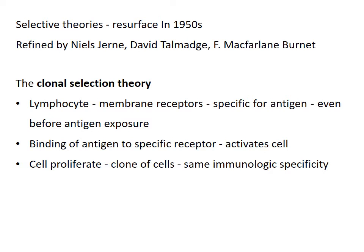In the 1950s, selective theories resurfaced and were refined by Niels Jerne, David Talmadge, and F. Macfarlane Burnet as the clonal selection theory. According to this theory, an individual lymphocyte expresses membrane receptors that are specific for a distinct antigen even before the lymphocyte is exposed to the antigen. Binding of antigen to its specific receptor activates the cell, causing it to proliferate into a clone of cells that have the same immunological specificity as the parent cell.